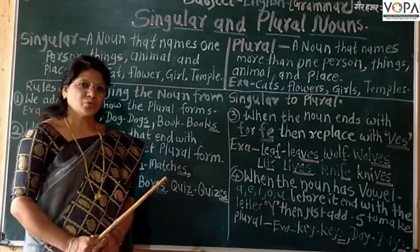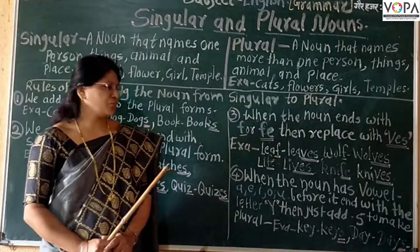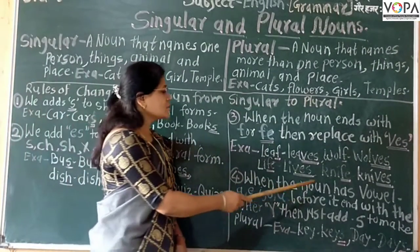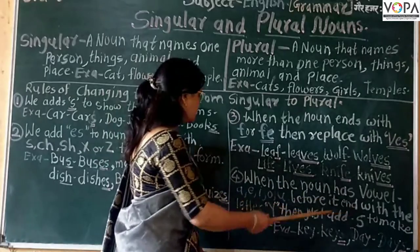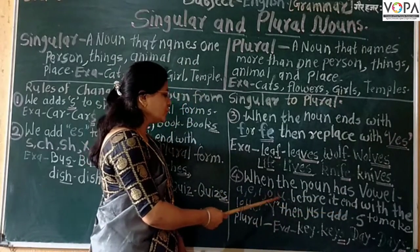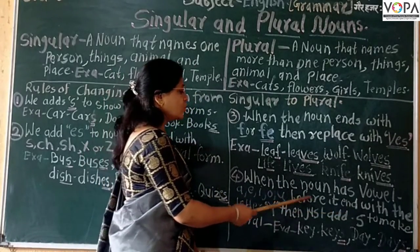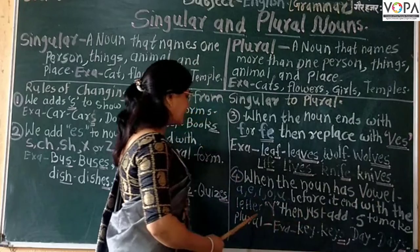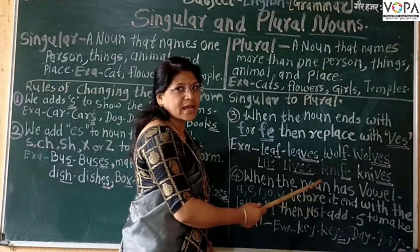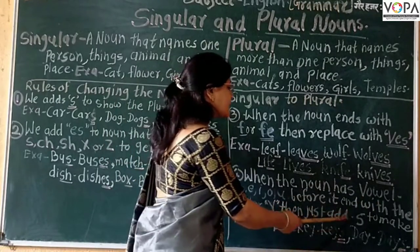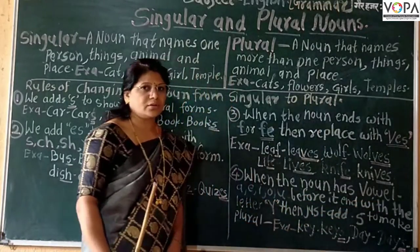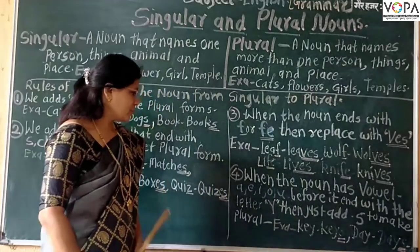Now we learn rule number 4. When a noun has the vowel A, E, I, O, or U before the letter Y at the end, then just add S to make the plural.